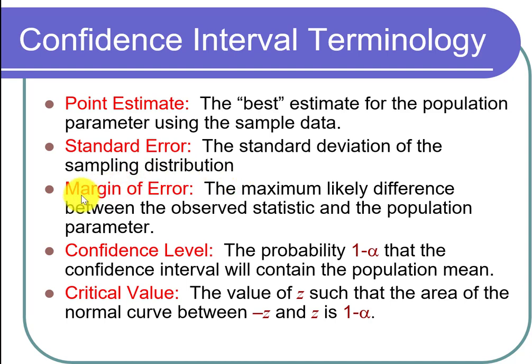The margin of error is the maximum likely difference between the observed statistic and the population parameter. For example, suppose you surveyed a bunch of people and found that 58 percent approve of the way the president is handling the job. How good an estimate is that 58 percent? If you say you might be off by 5 percent, that would be the margin of error.